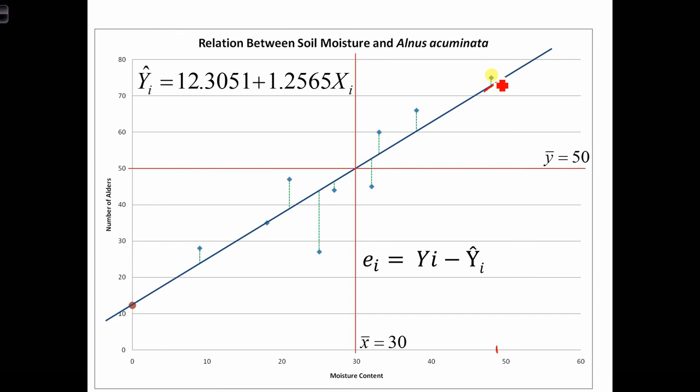It's slightly different, you'll notice, to the observed value of y. And the amount that the observed differs from our regression line is simply the error in our model. It's the error in our estimate at that location.